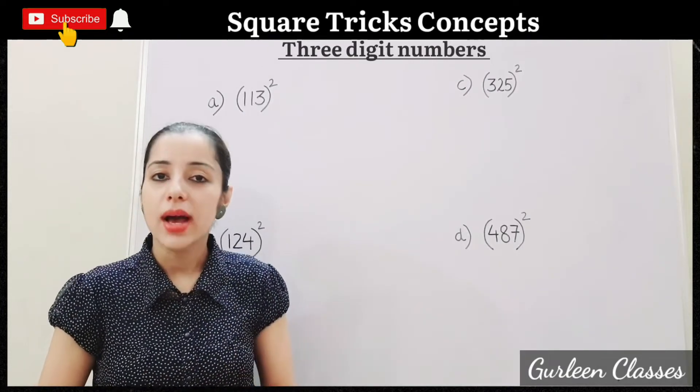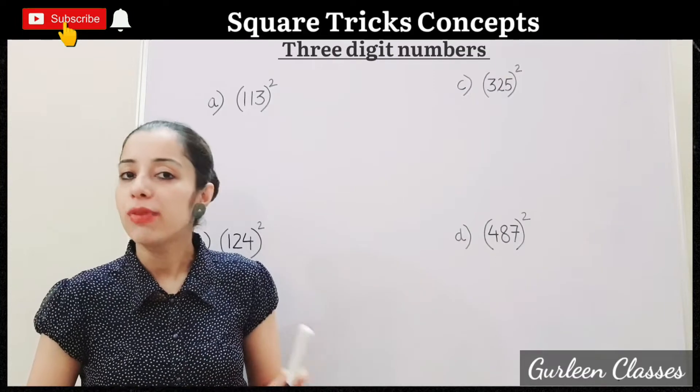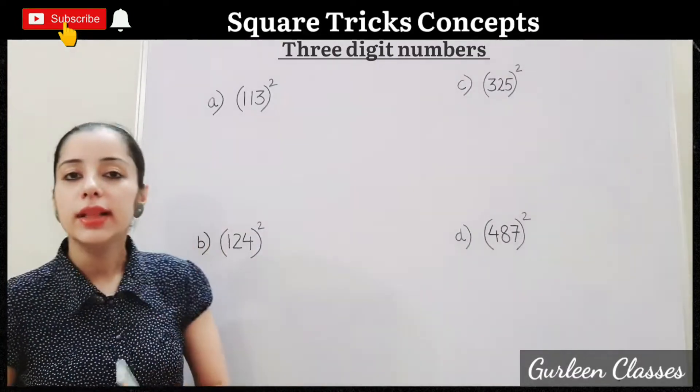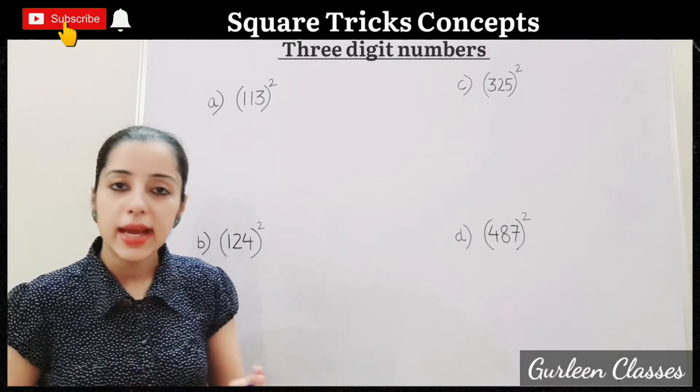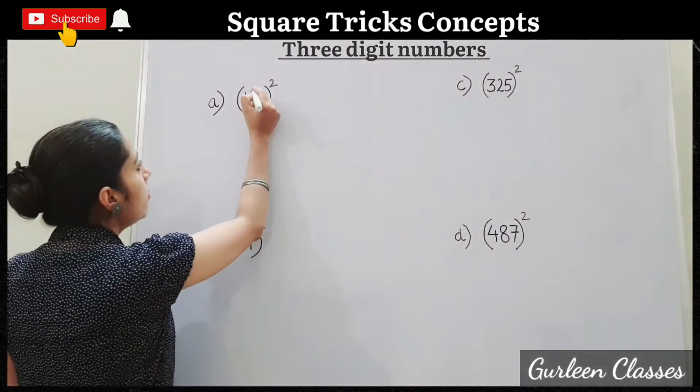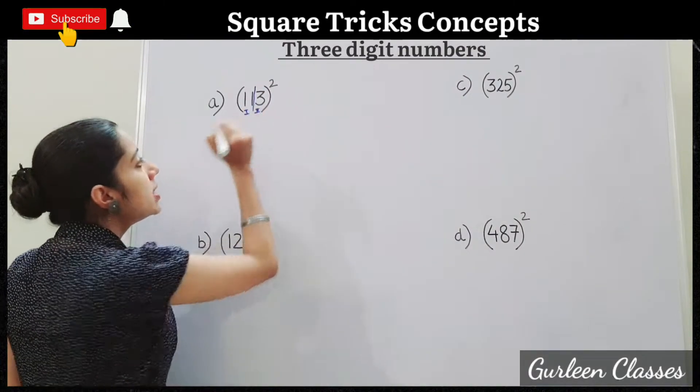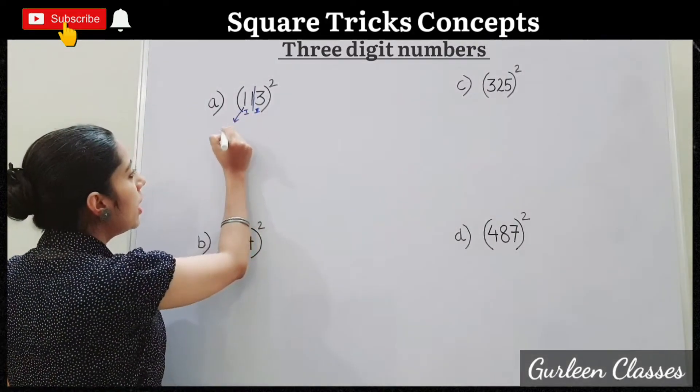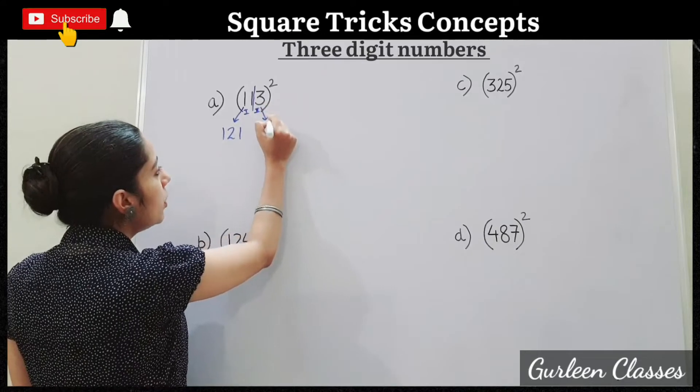Now let us learn how to find out squares of 3-digit numbers. Steps are same which I explained to you to find out squares of 2-digit numbers. A. 113 square. So 113 square you will break the number. So 11 will be your first number and 3 will be your second number. So 11 square you will find out, 11 elevens are 121. 3 square, 3 threes are 9. So we will write 09.